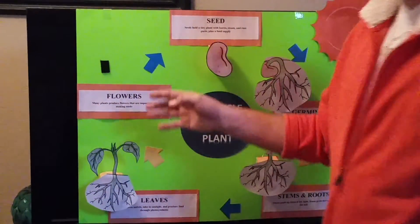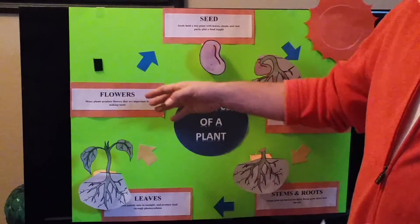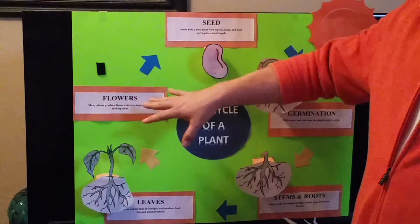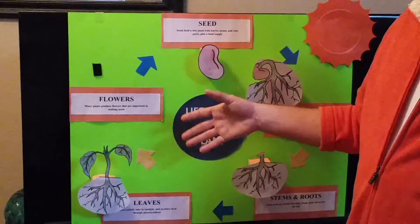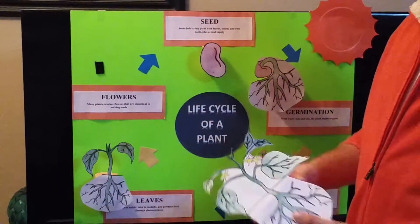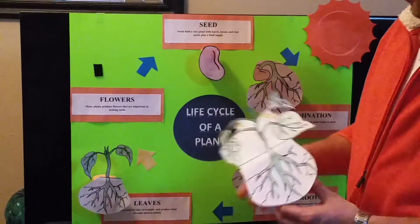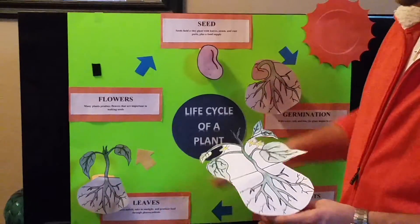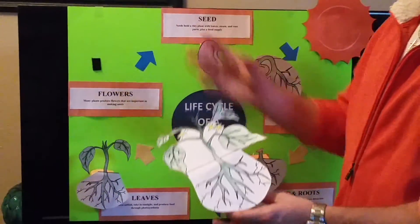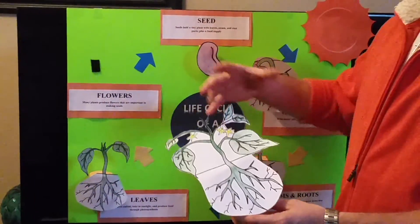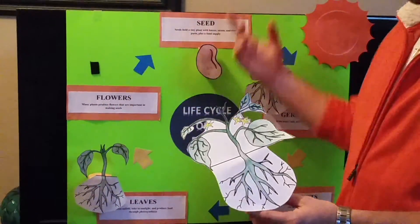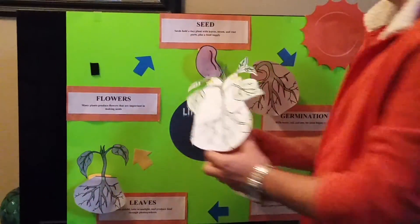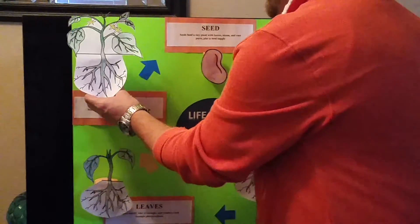Finishing with the flower cycle, where plants produce flowers that are important in making seeds, which then those seeds will drop into the soil and create the process all over again.